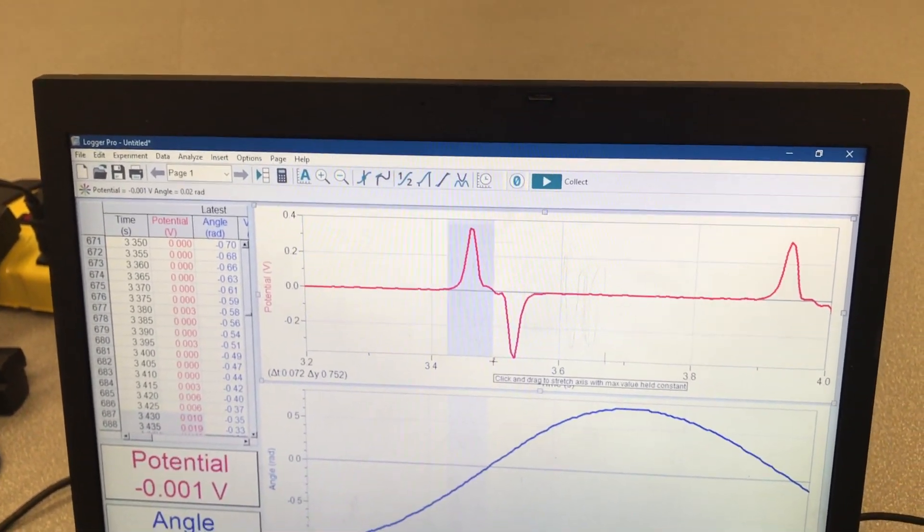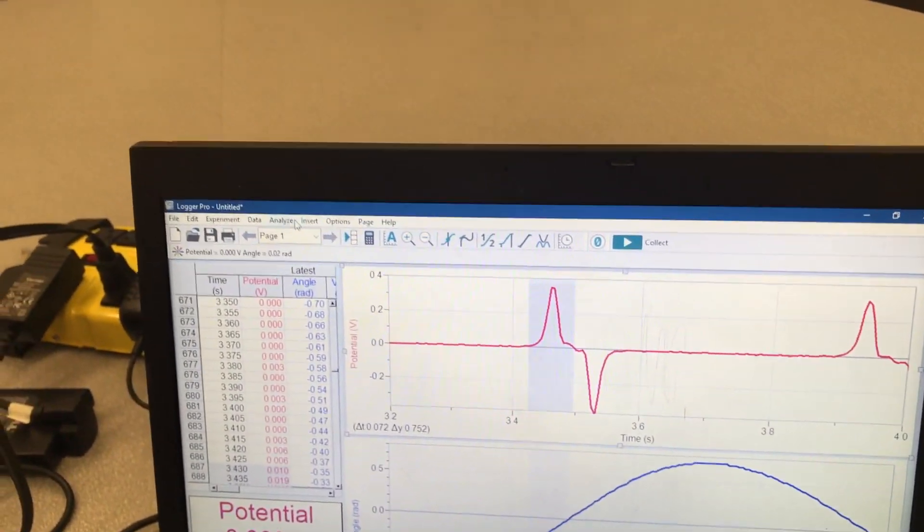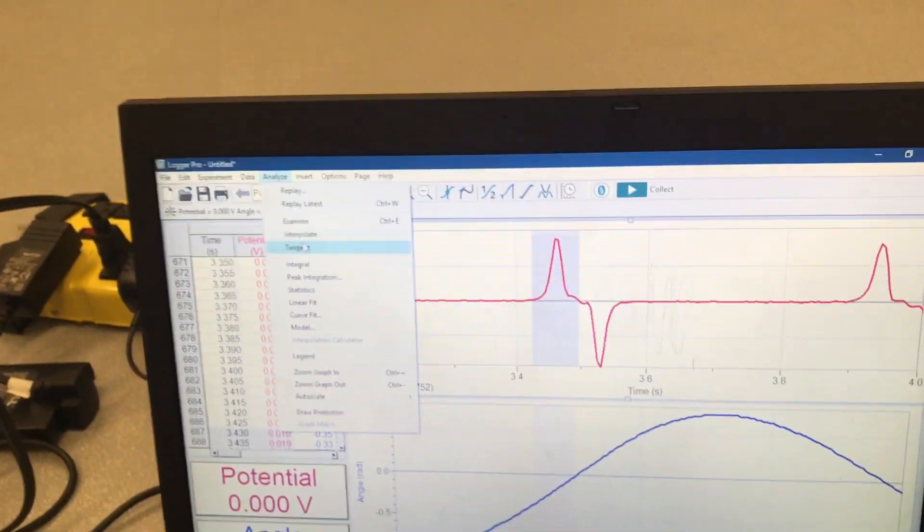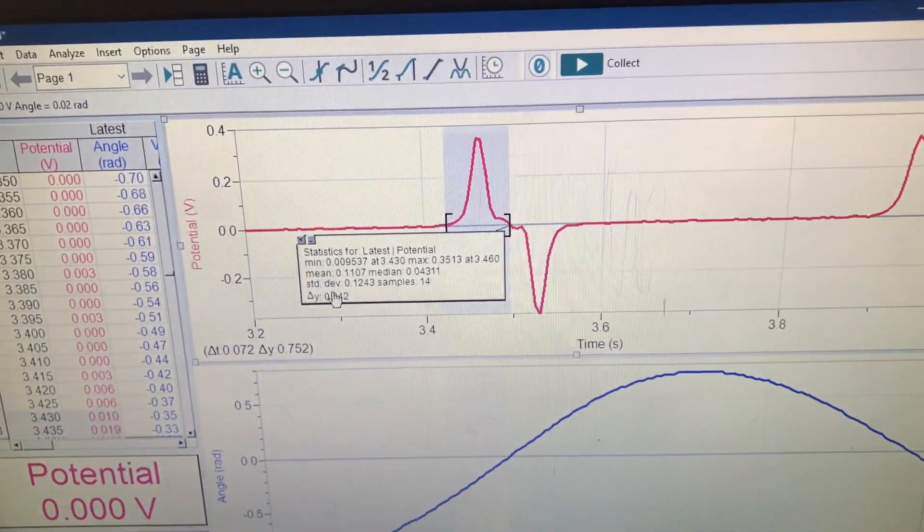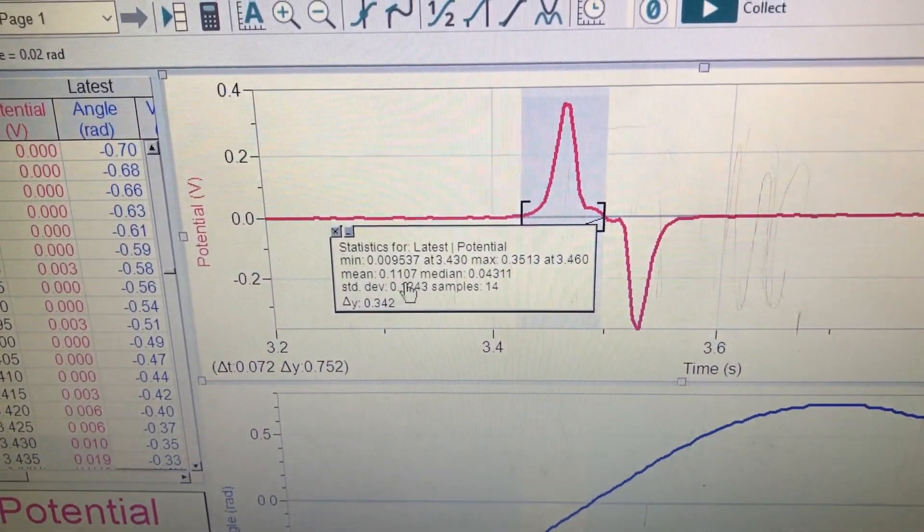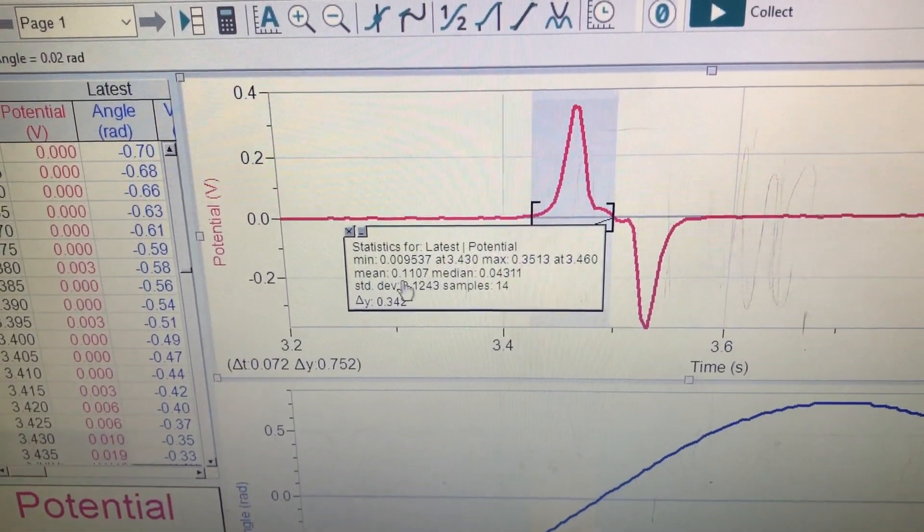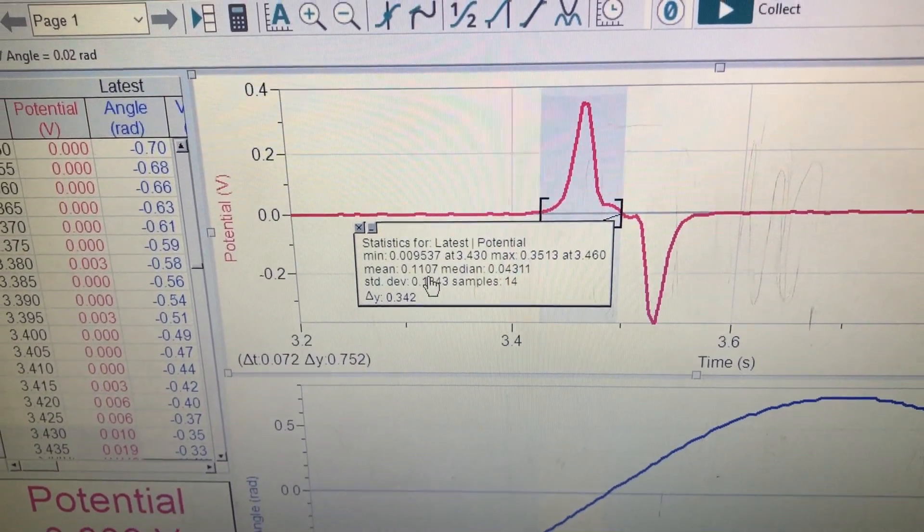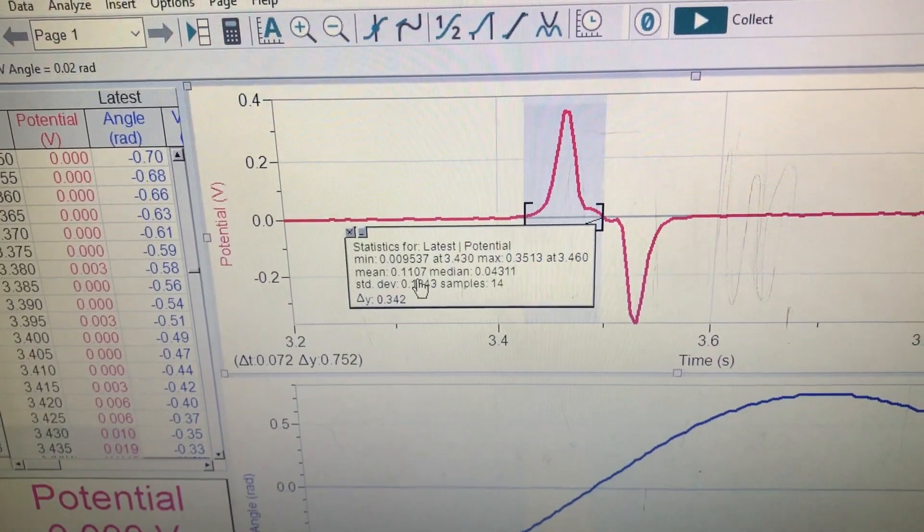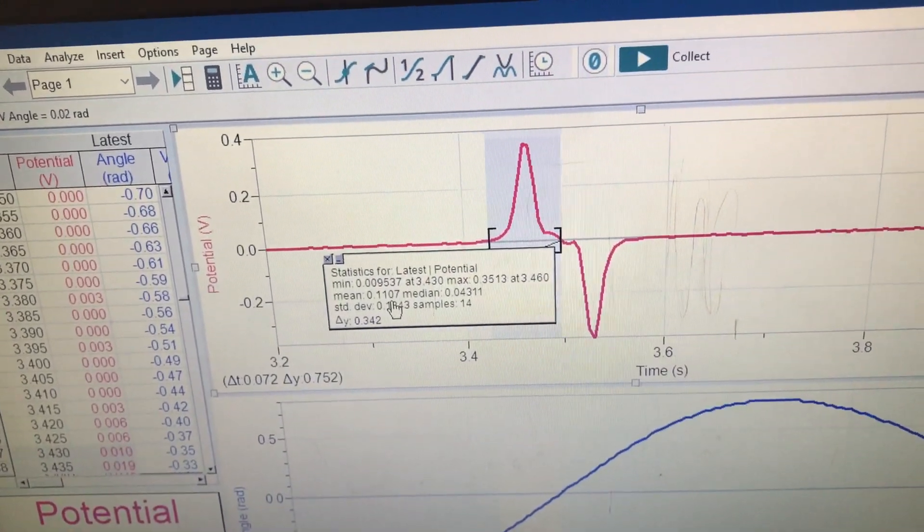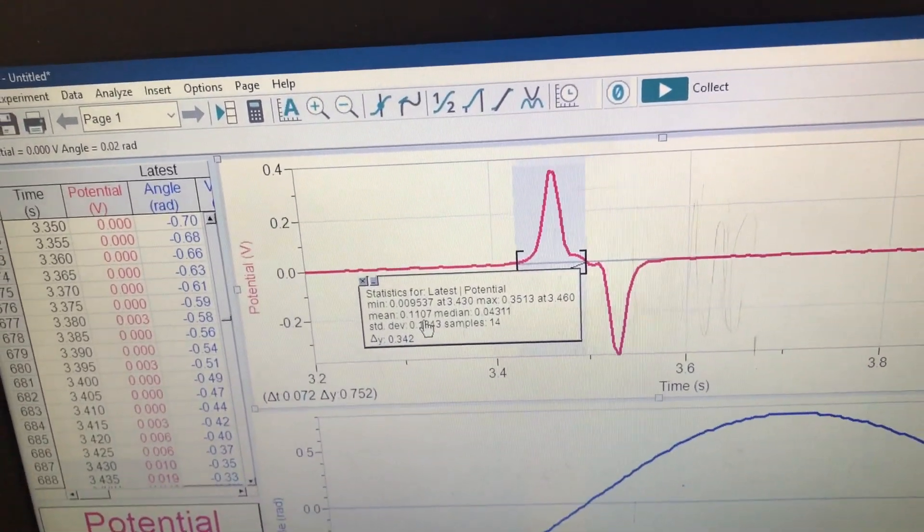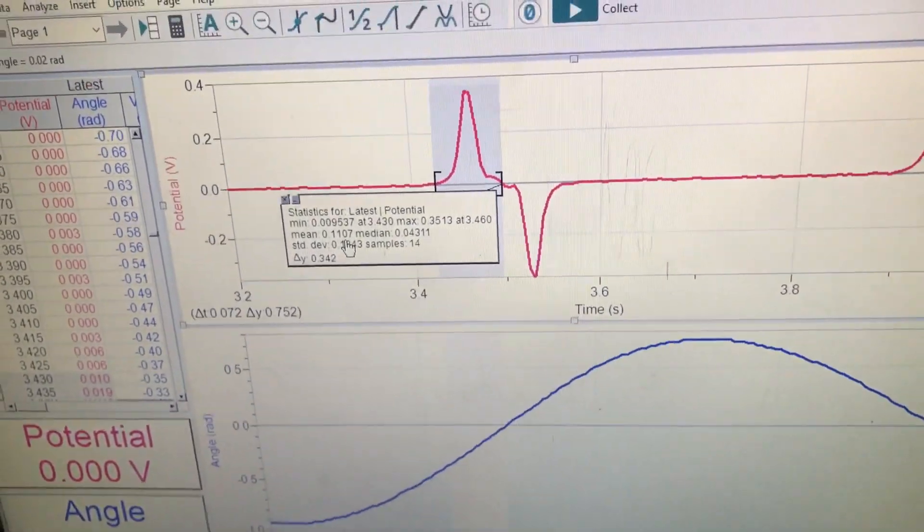So now we've got this all highlighted. Now we can go to analyze and we will look at statistics. And so we see this mean value here, this 0.1107. So that mean is going to be the average value of the voltage in this interval. So that'll be the average EMF or the average voltage for that period. Straightforward, easy enough.